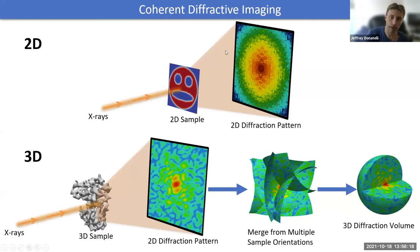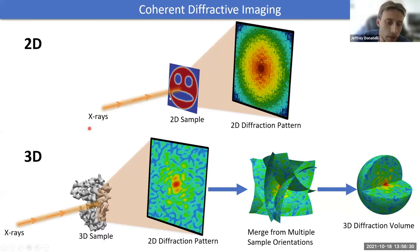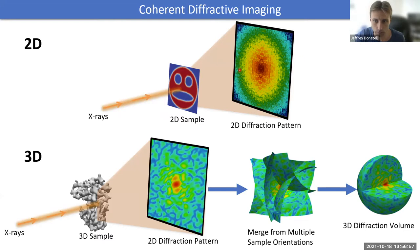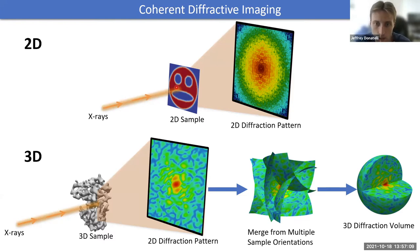Coherent diffractive imaging involves placing a sample in front of an x-ray beam — it could also be electrons or neutrons. X-rays scatter off the sample and form a diffraction pattern collected on a detector. What is measured on the detector is the squared magnitude of the Fourier transform of the sample's density.